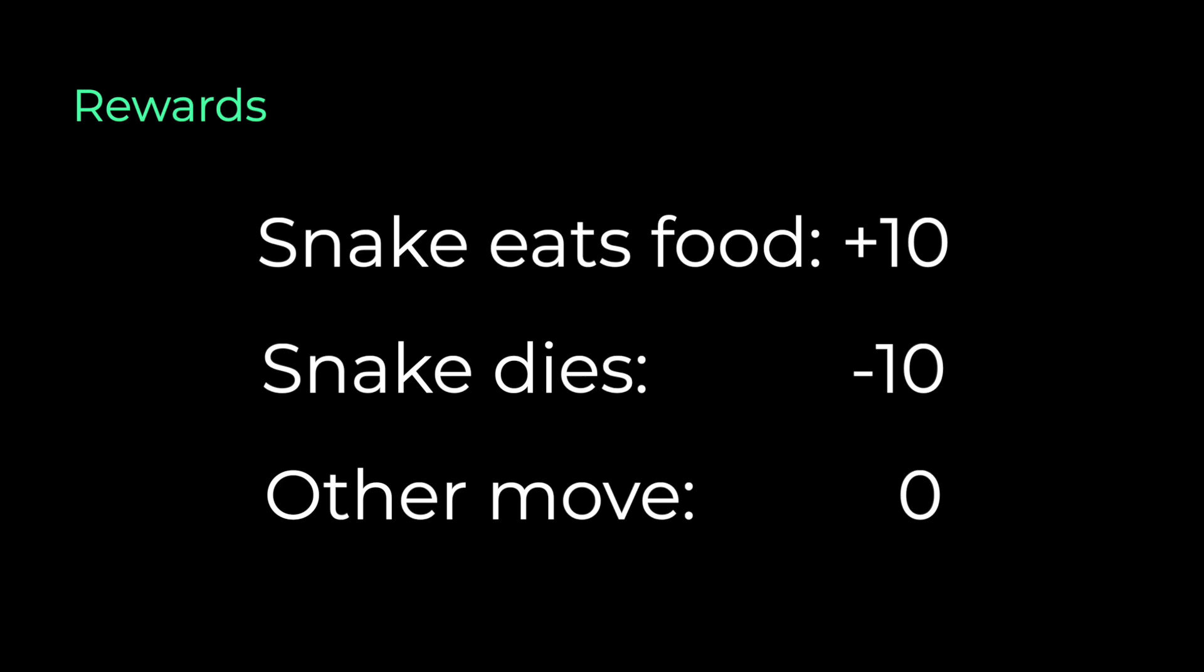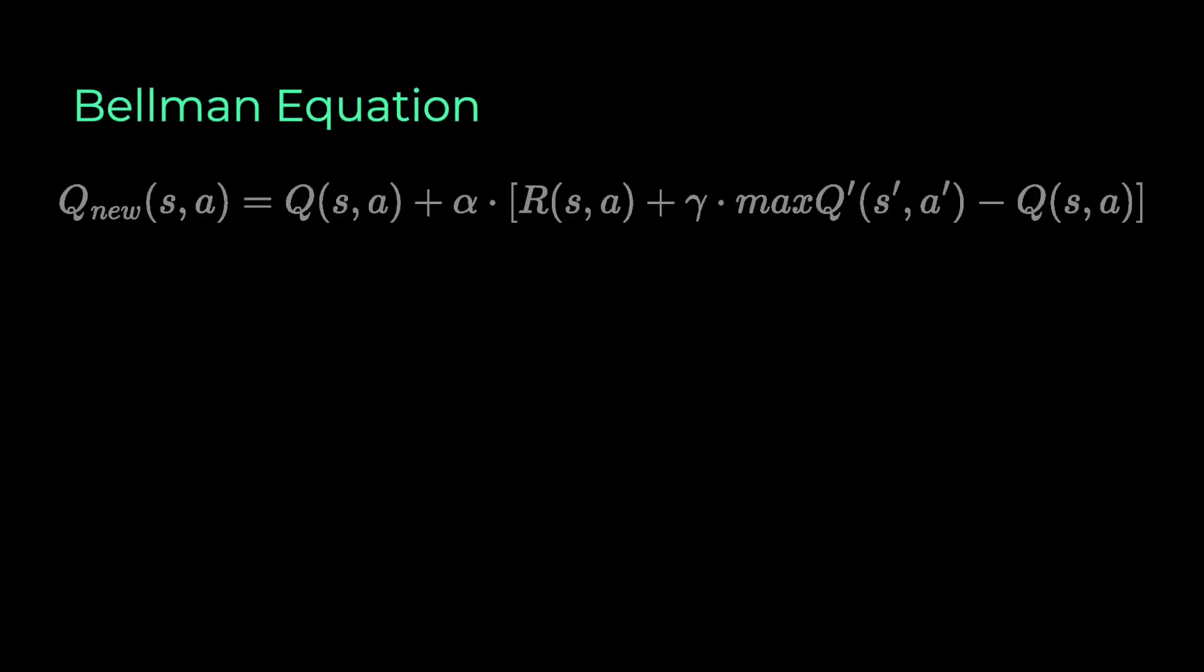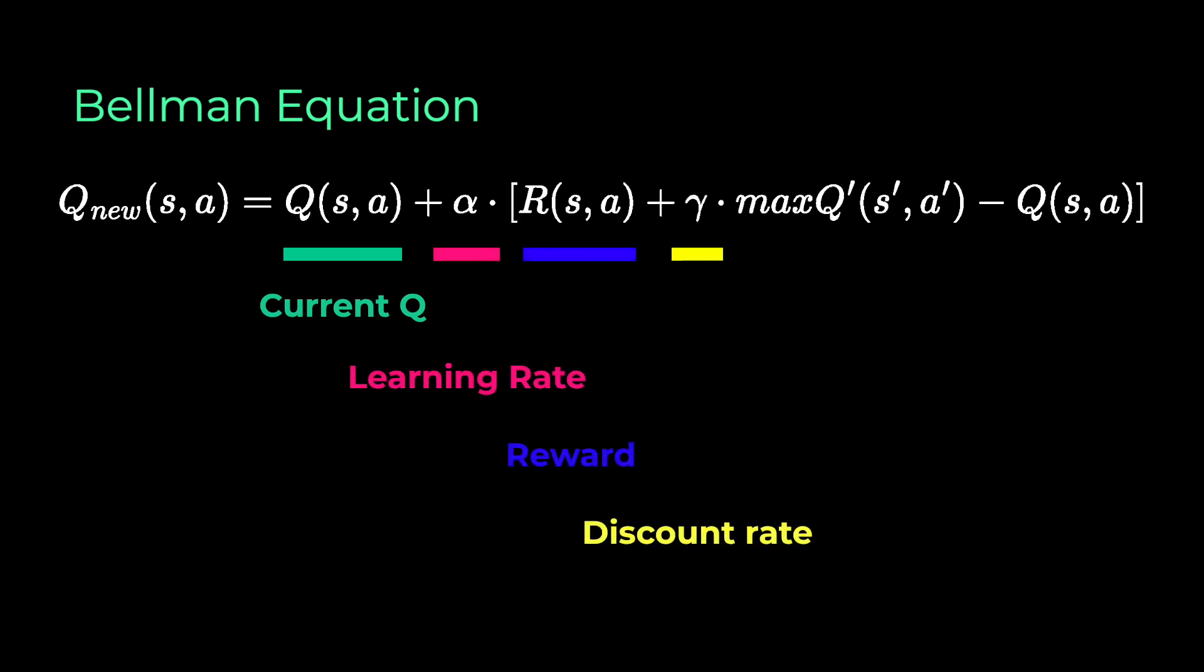Now with all these elements, we can inspect the Bellman equation. The idea here is to update our Q value like this. The new Q value is calculated by the current Q value plus a learning rate times a reward plus a discount rate times the highest Q value between possible actions from the new state and then minus the current Q value.